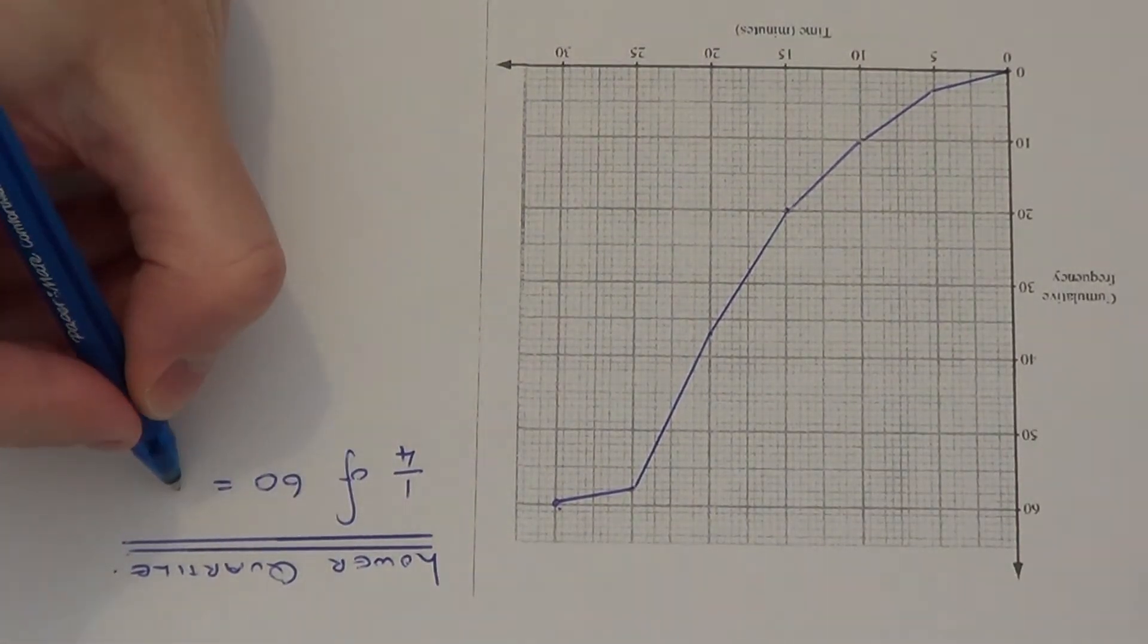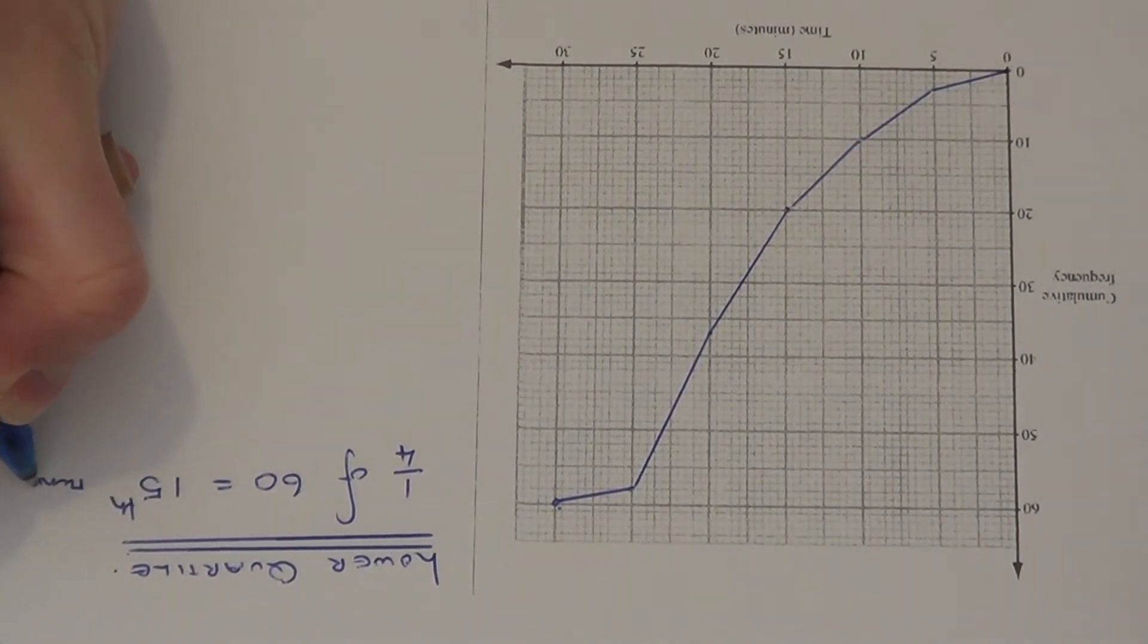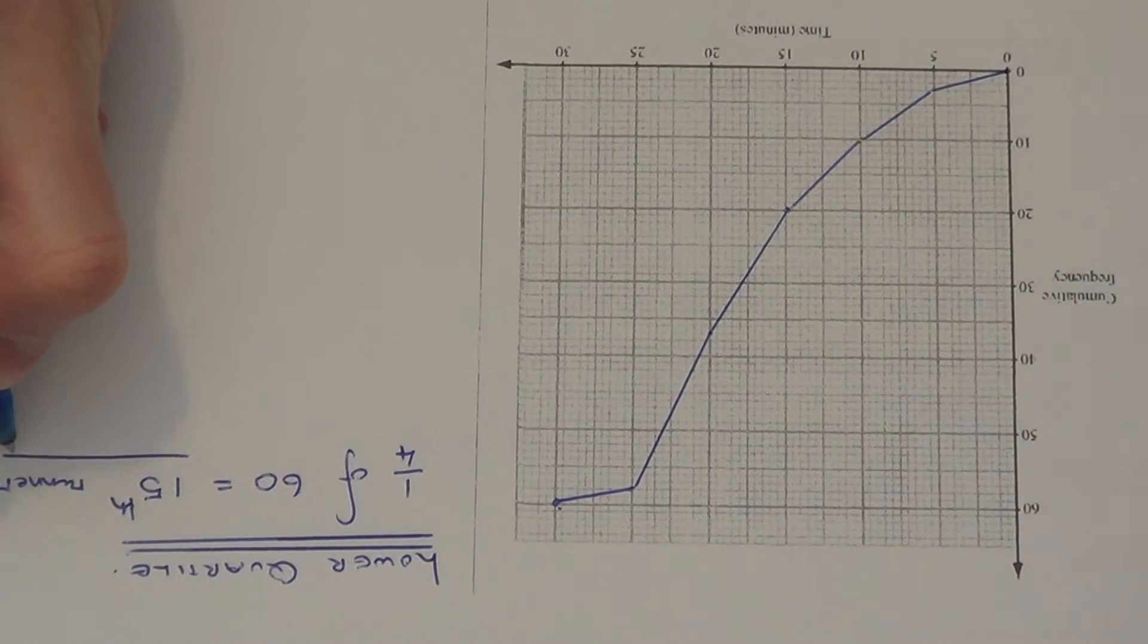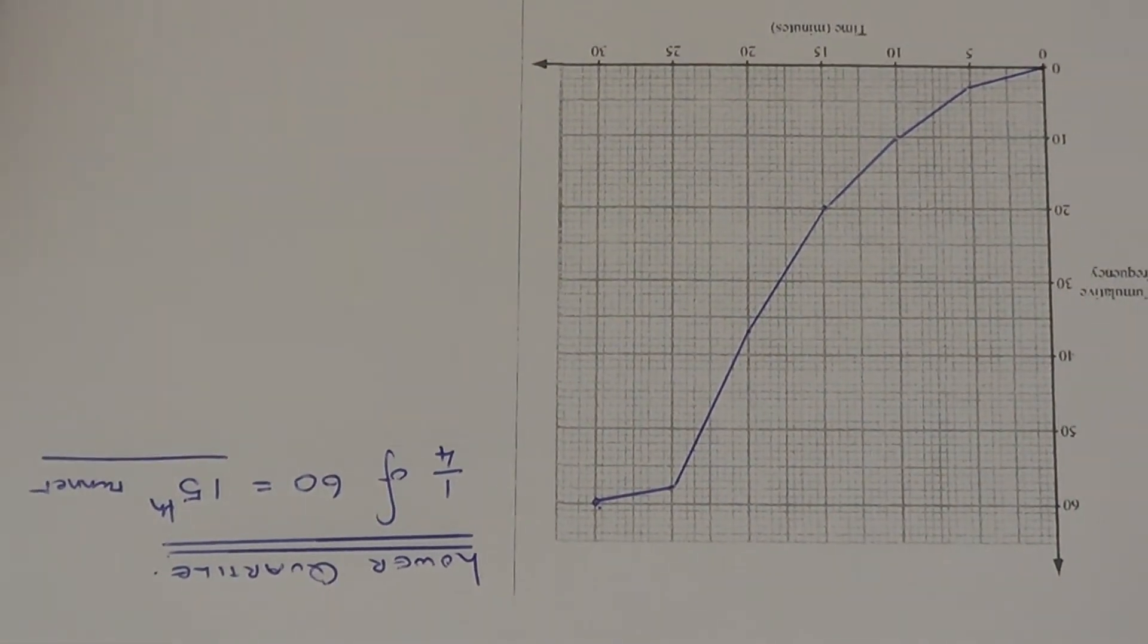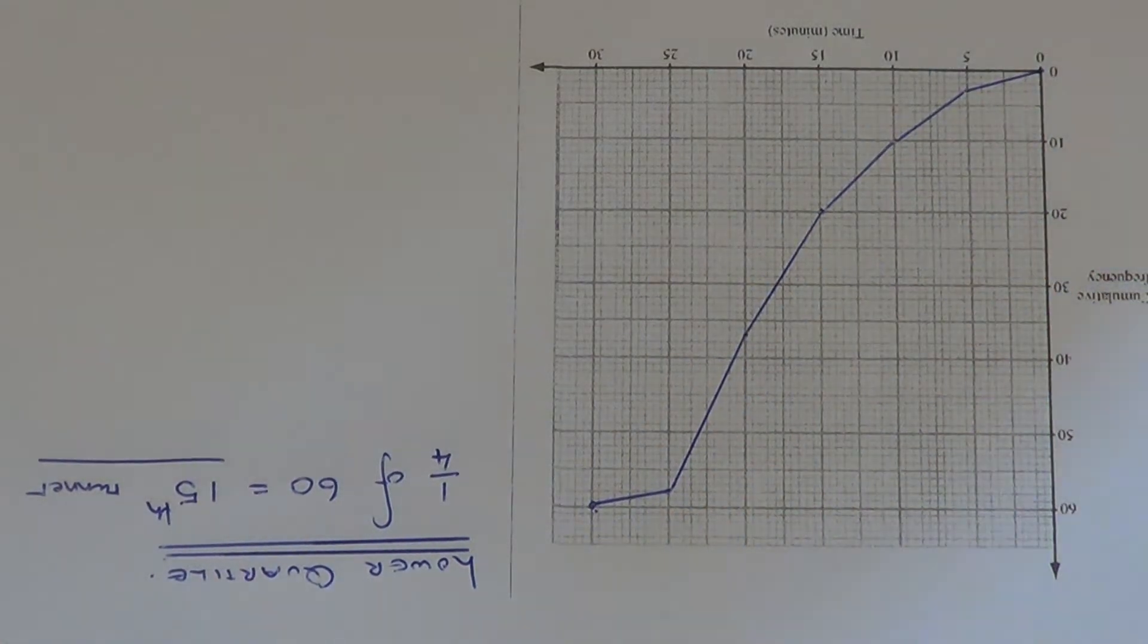A quarter of 60 is 15, so this tells us the lower quartile will occur on the 15th runner. We just need to read off now the time that the 15th runner took to complete the race.